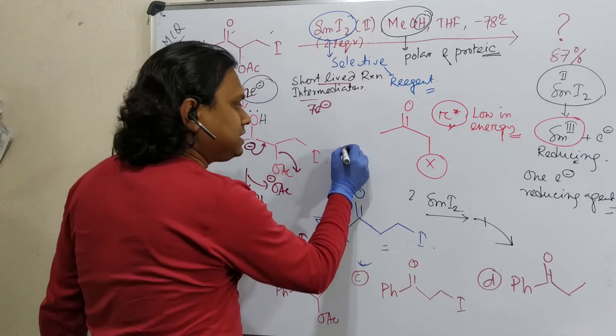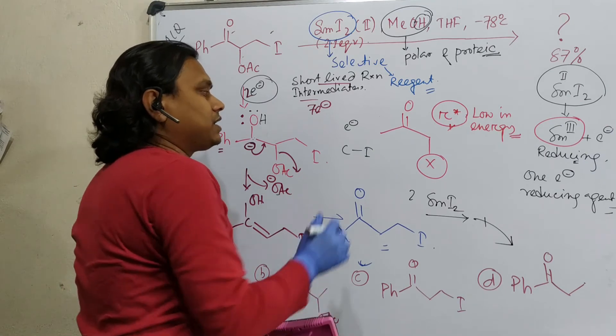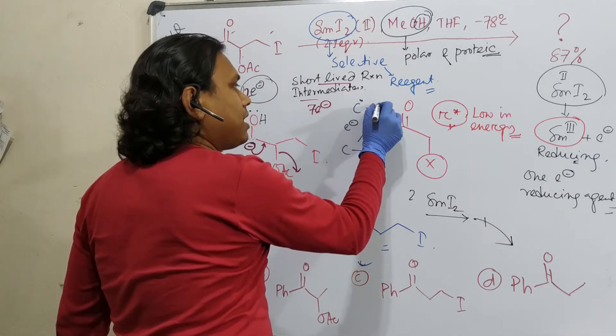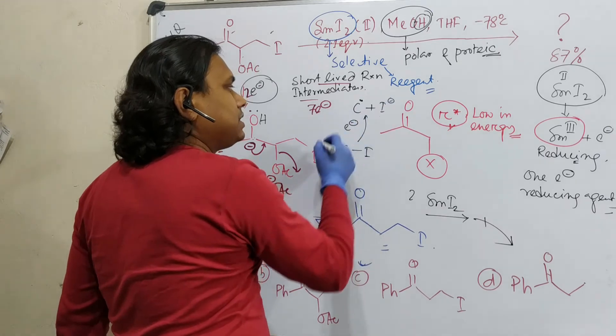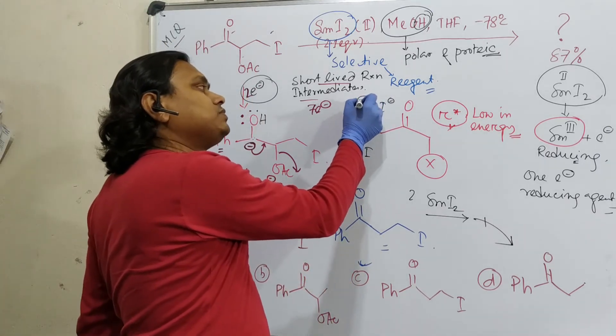this C-I bond, when it takes one electron, it converted into C dot, plus I minus left. And again, another equivalent of electron, when this C dot takes, it became C minus.